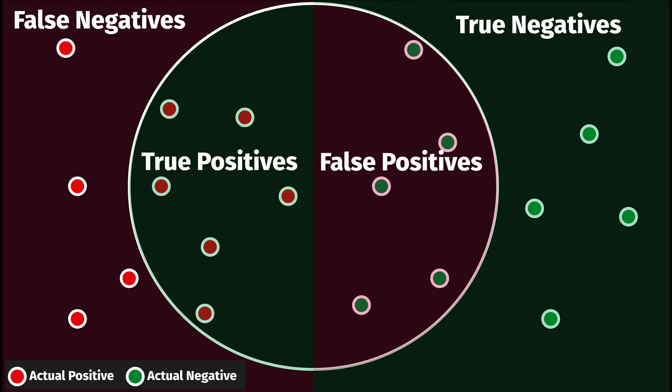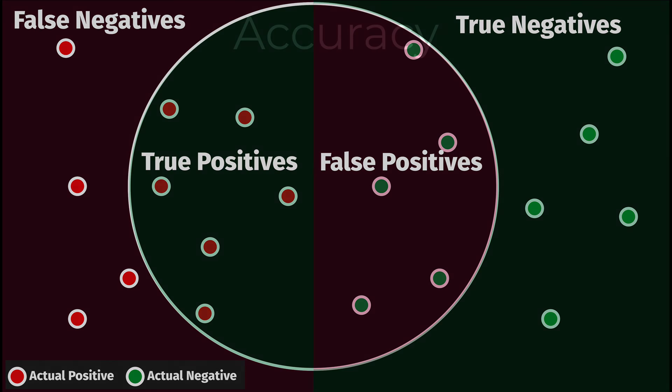When the model correctly identifies a negative case, this classification is a true negative, or TN. Incorrect negative classifications are false negatives, or FN. How can we measure the performance of a binary classification model? There are several measures for this.